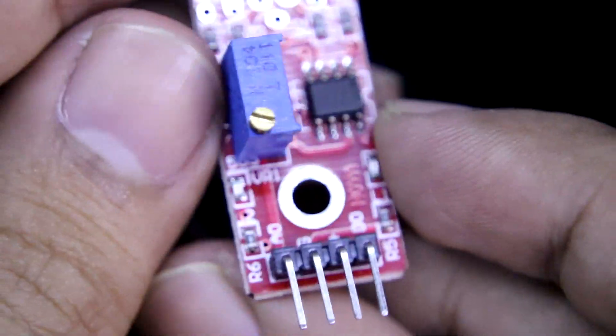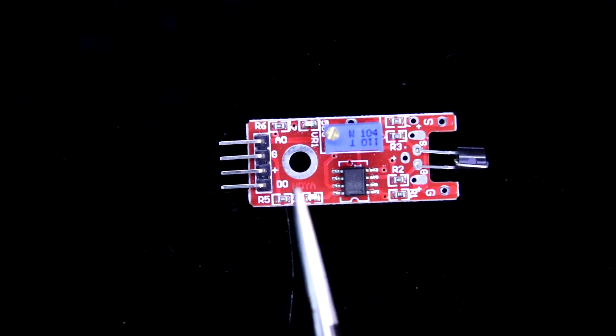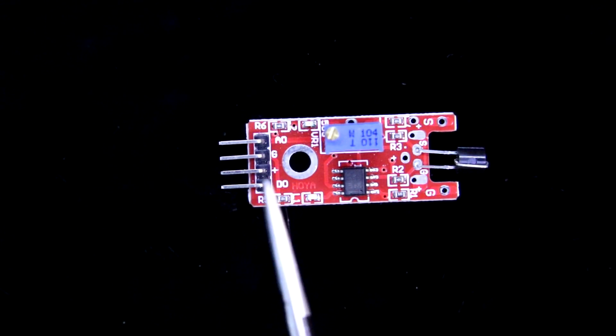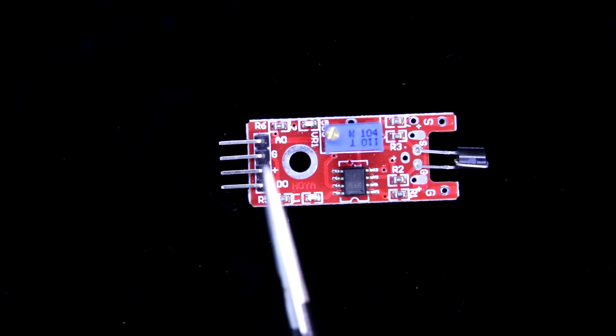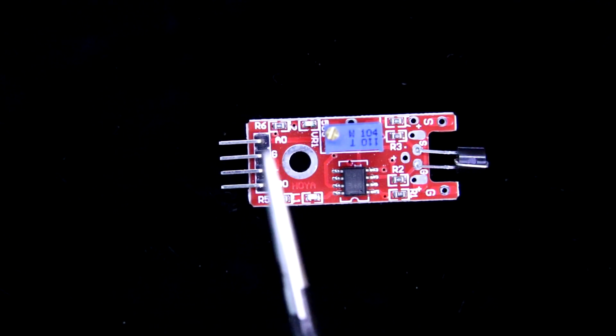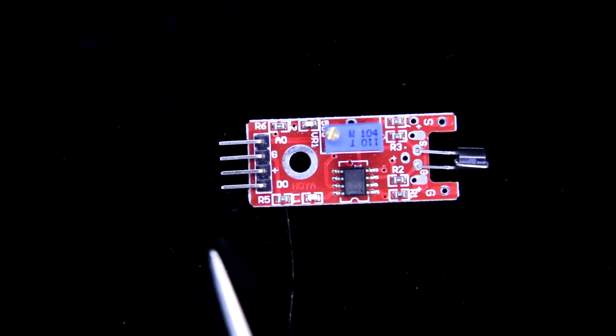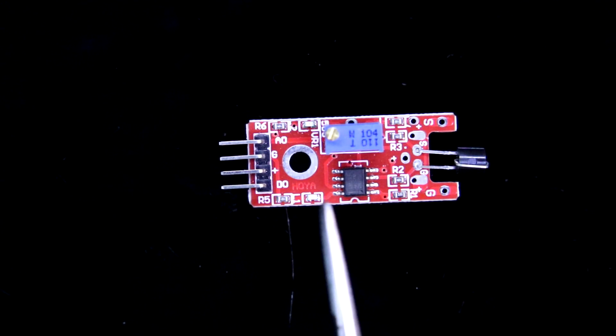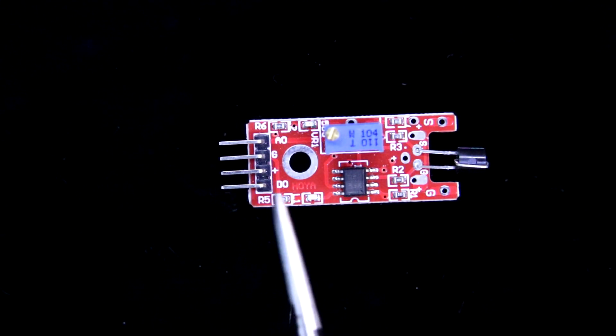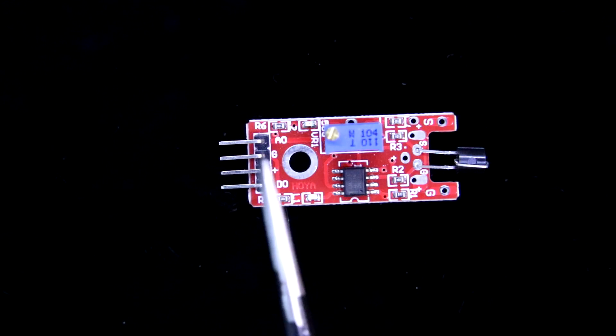It has 4 pins. DO means digital out, PLUS means plus VCC, G means ground and AO means analog out. As we are going to use this sensor with Arduino, we will use this pin, digital out. And these two are for power supply.